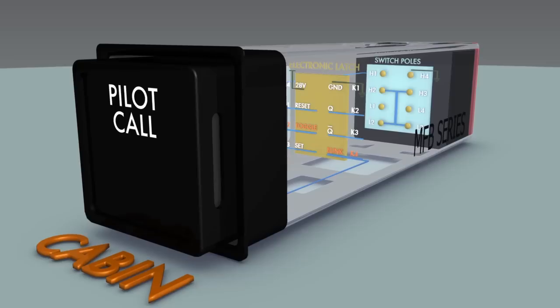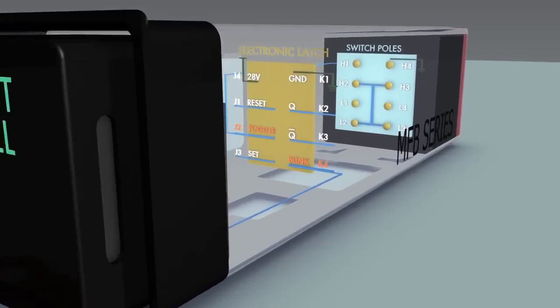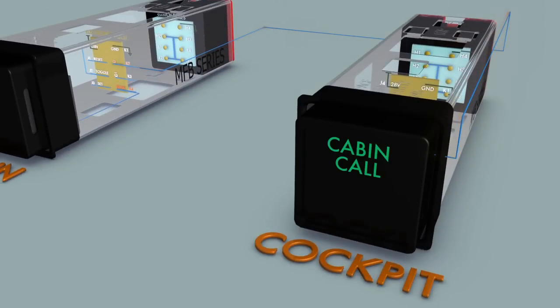The same activation of the pilot call switch and ground to toggle also activates the cue output of the electronic latch, illuminating the cabin call legend in the cockpit.